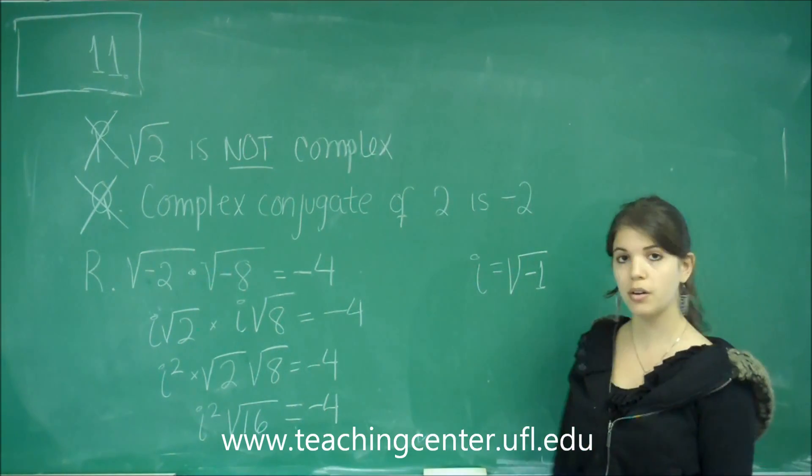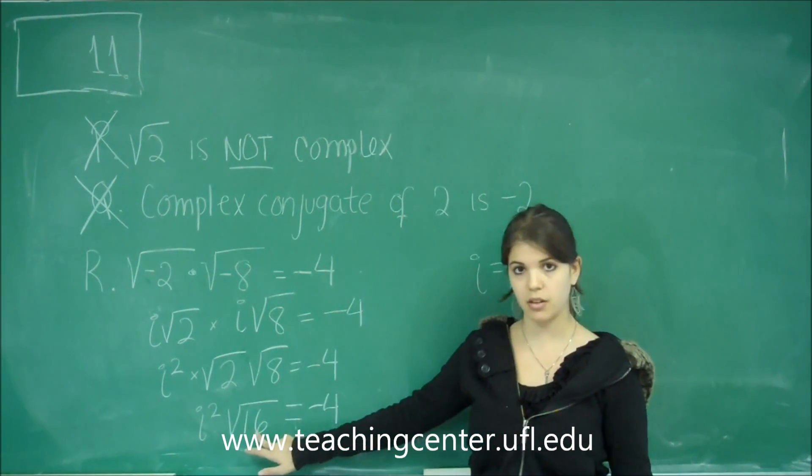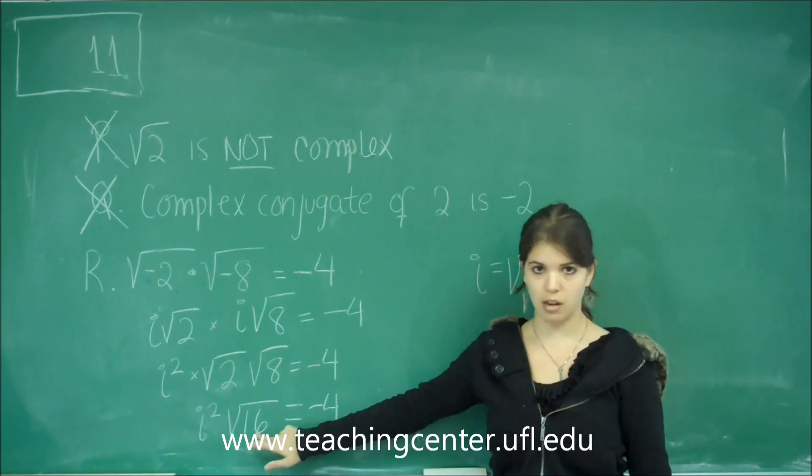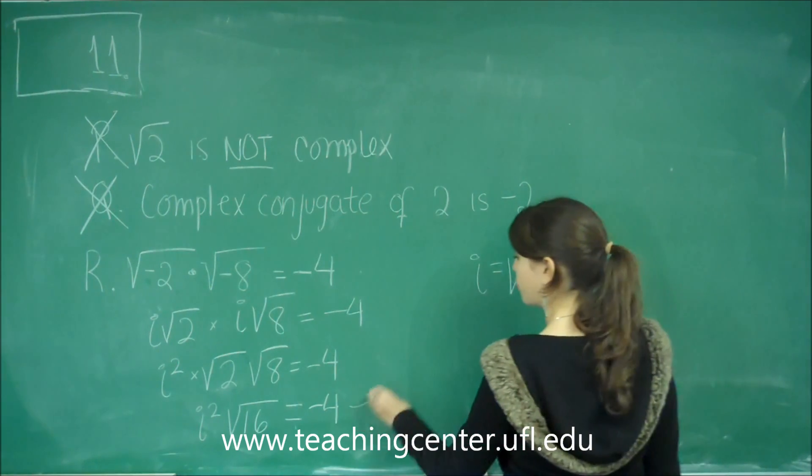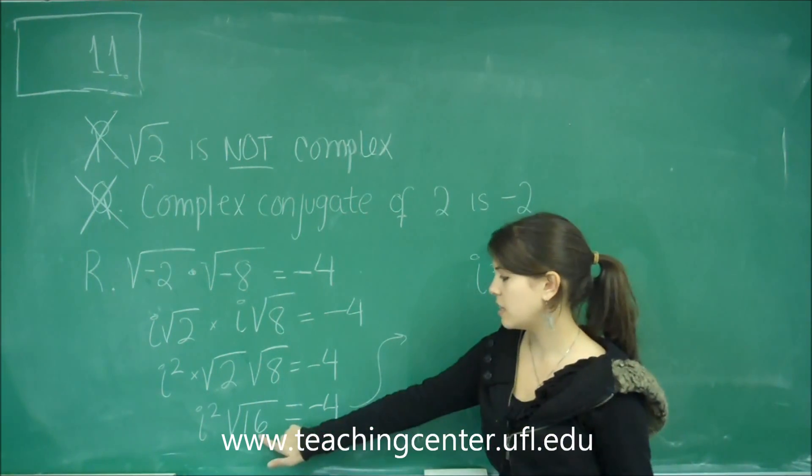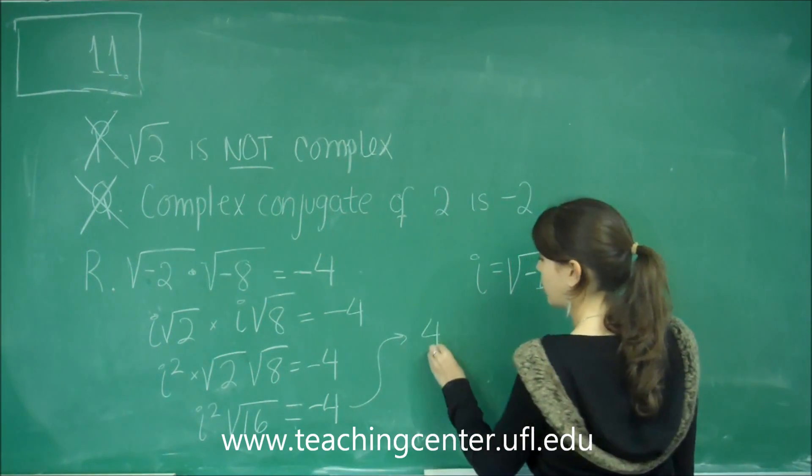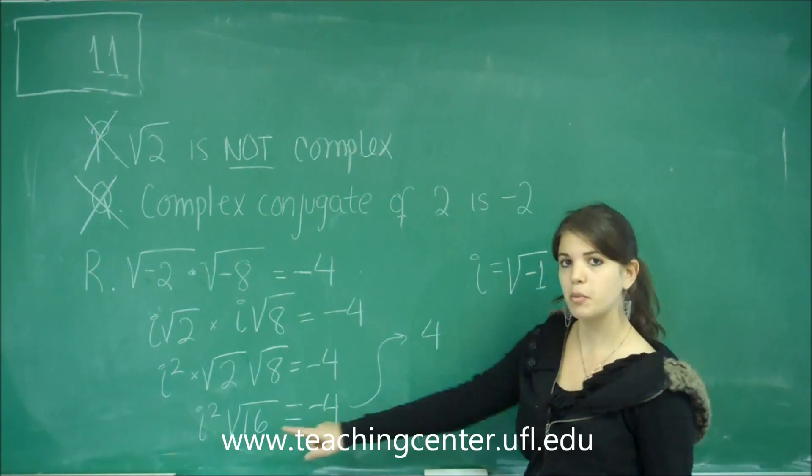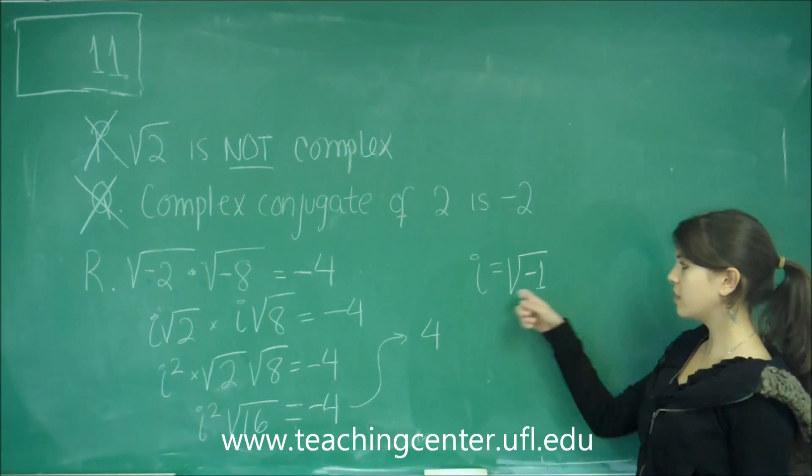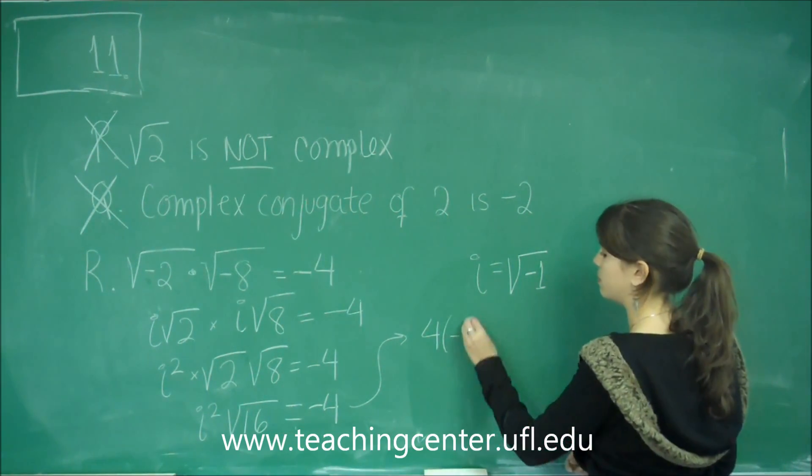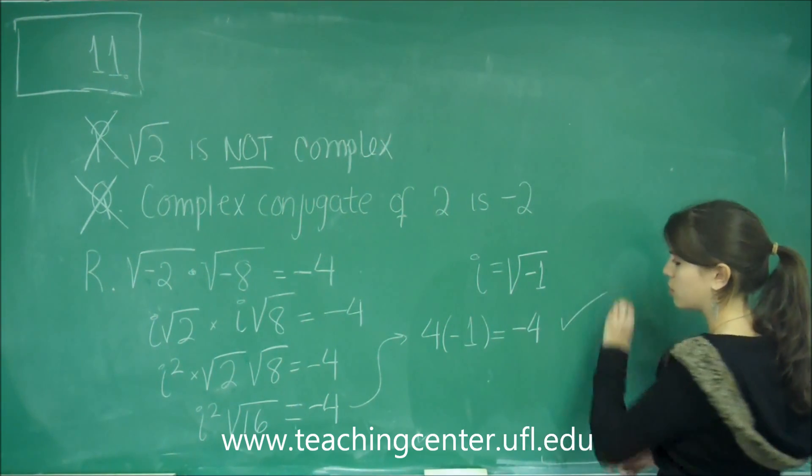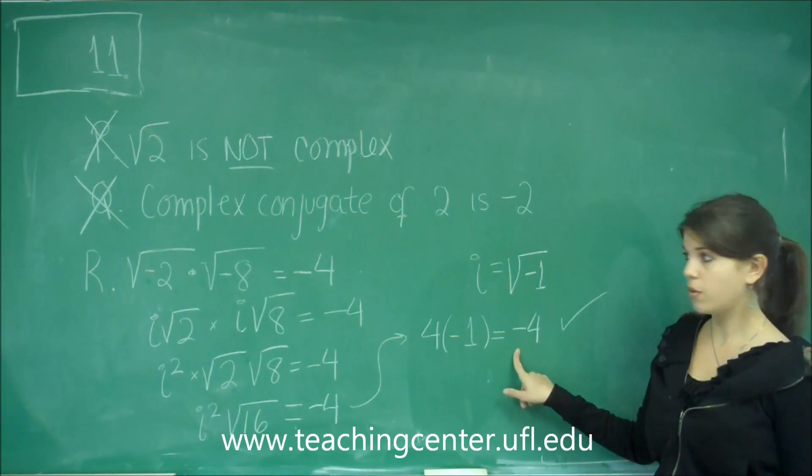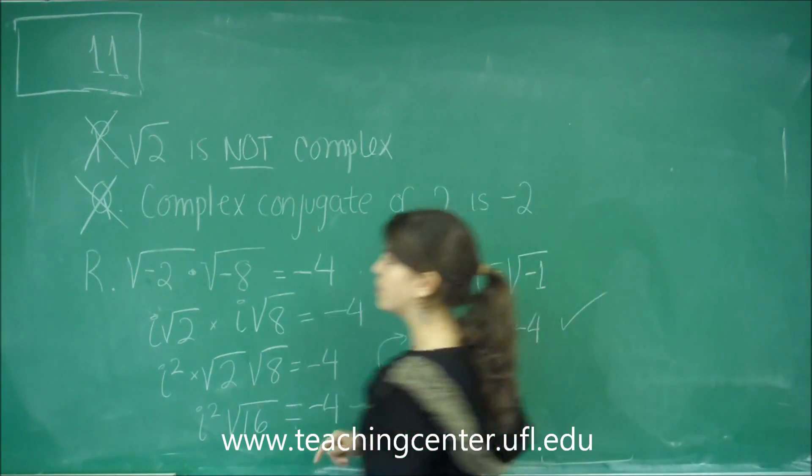Square roots that are being multiplied can be put together. Square roots that are being added cannot be put together under the same square root. The square root of 16 becomes just 4. I squared, remember from the definition, or from squaring this, is negative 1. And that will equal negative 4. So, negative 4 equals negative 4. So, part R is correct.